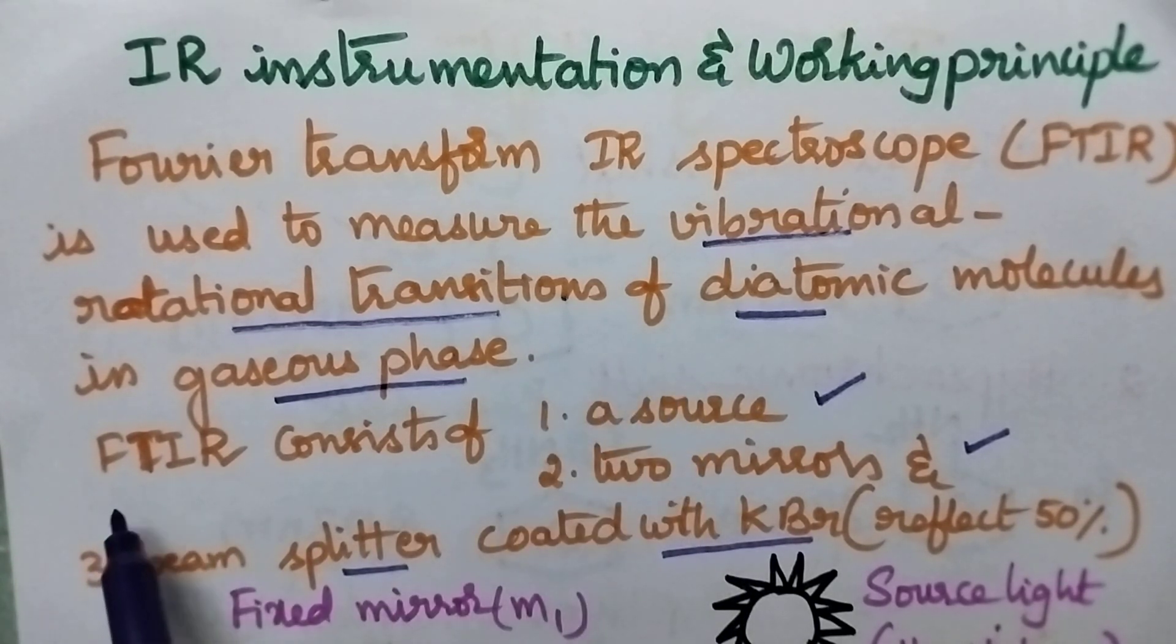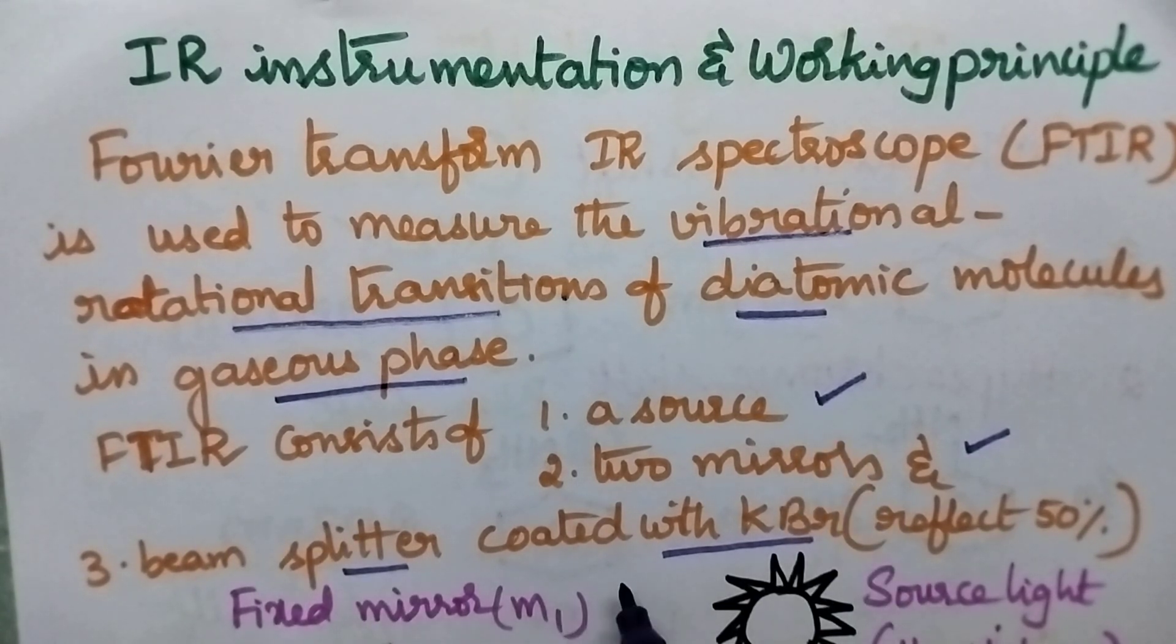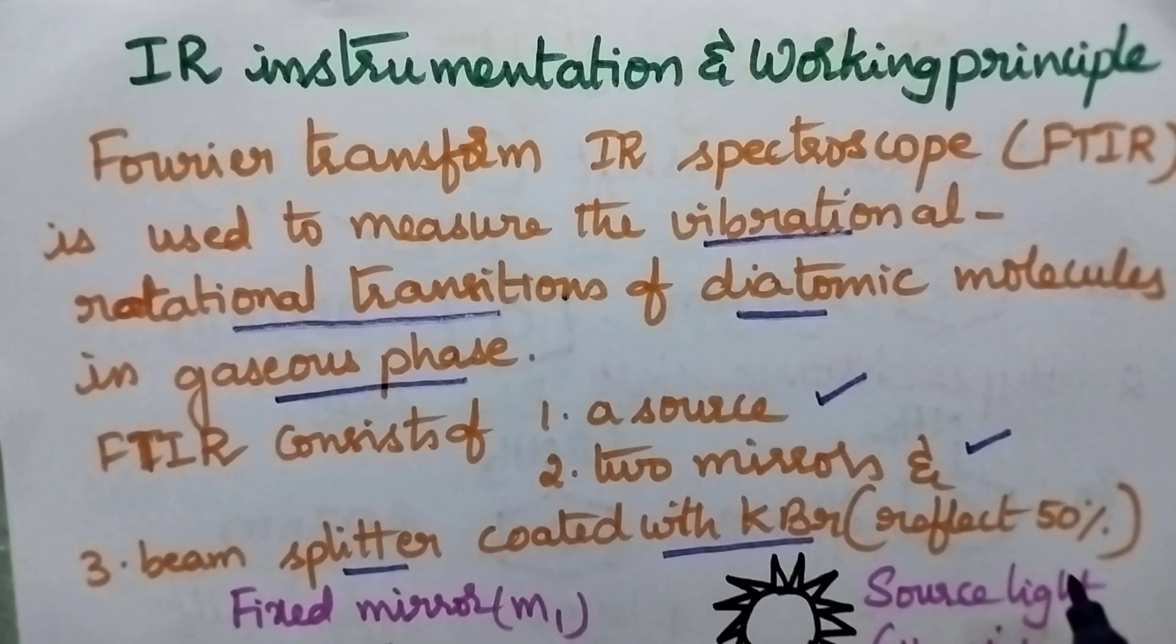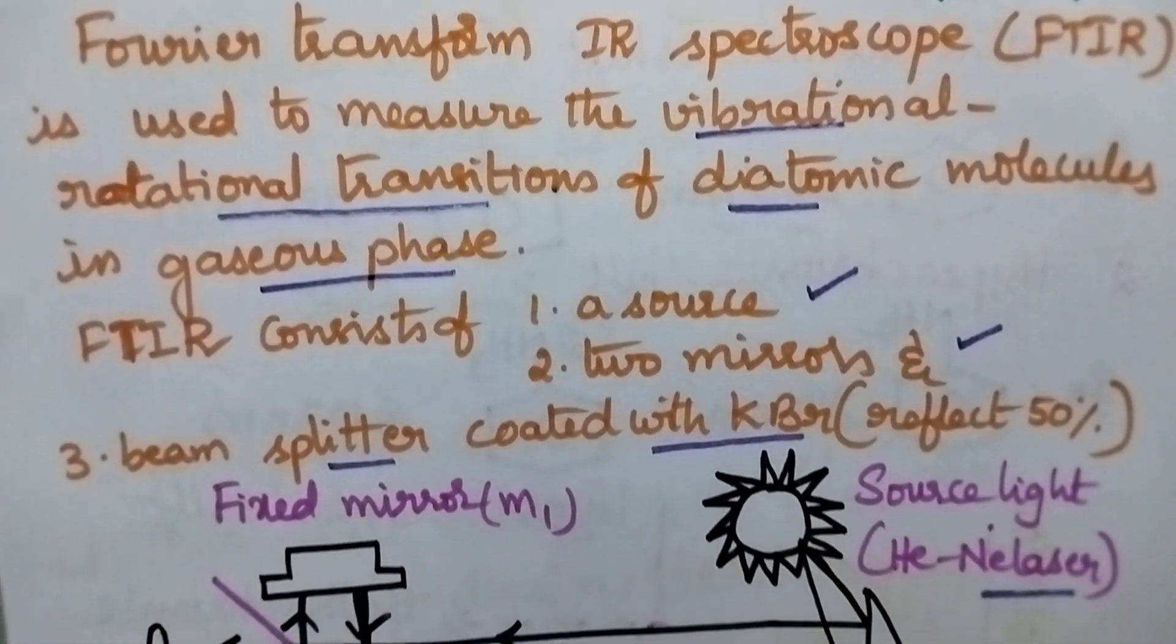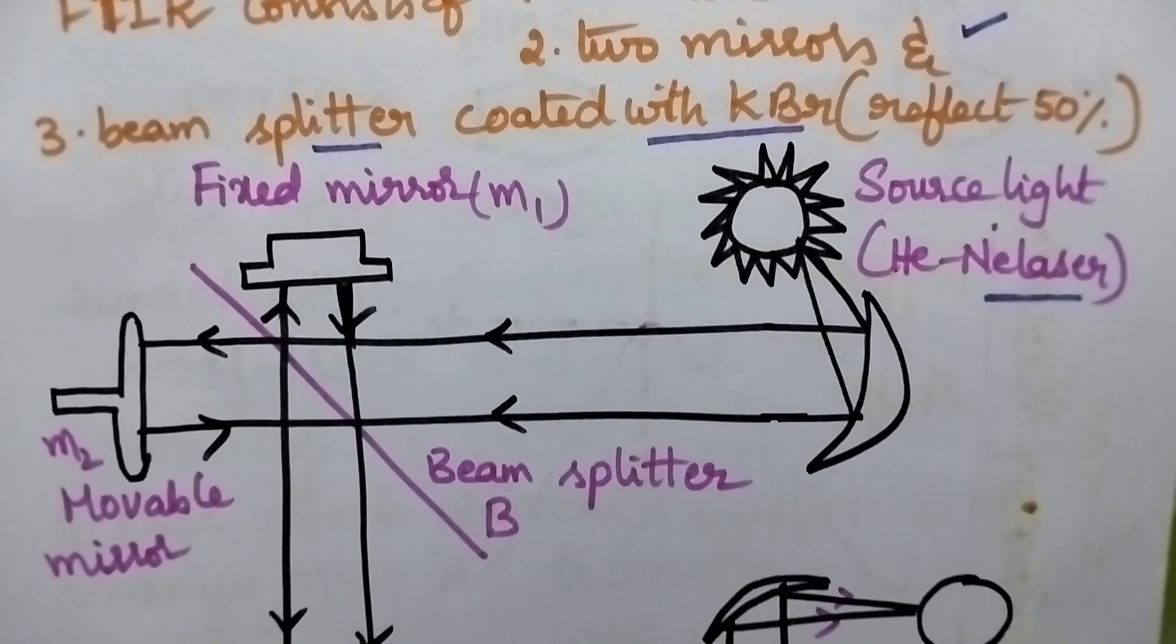Coming to the instrumentation, FTIR consists of a light source, two mirrors, and a beam splitter which is coated with KBR in order to reflect 50% of the radiation. What is the importance of potassium bromide? It reflects 50% of the radiation.